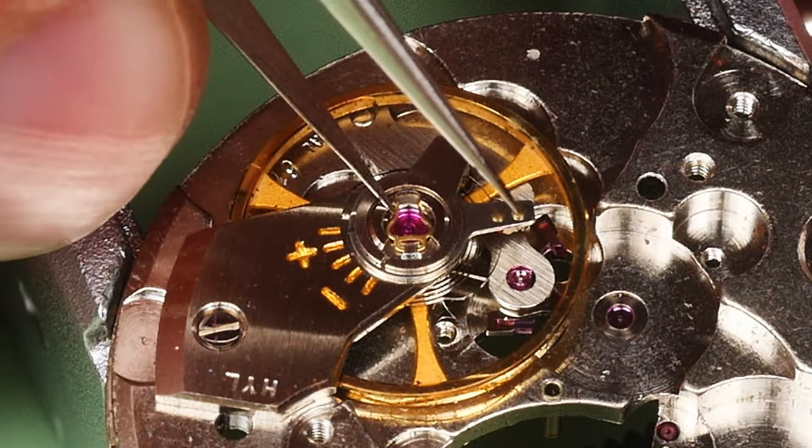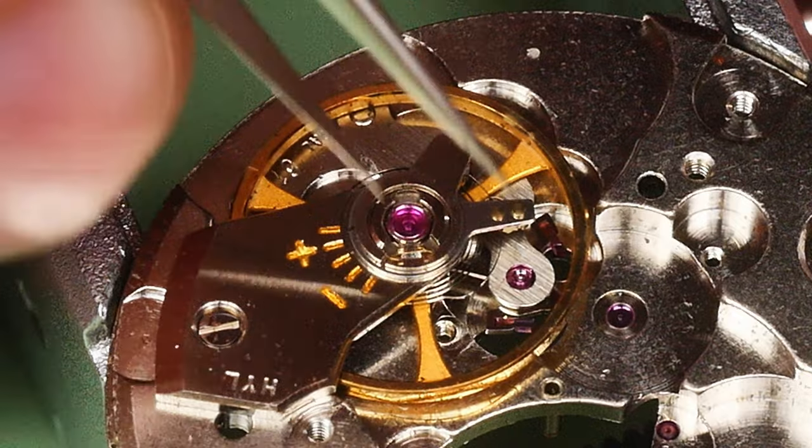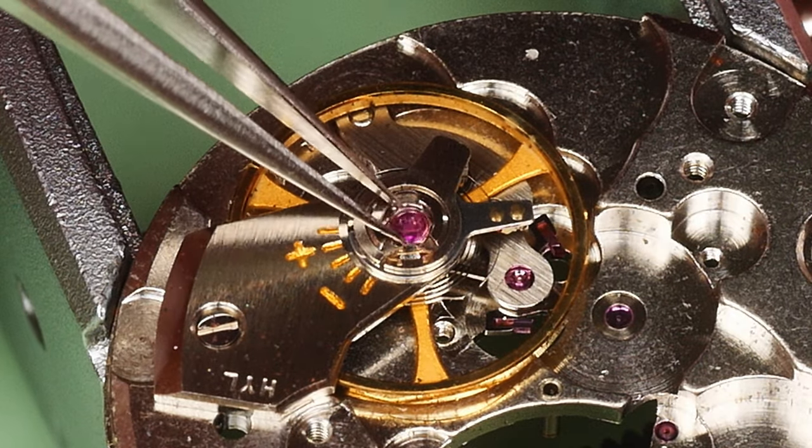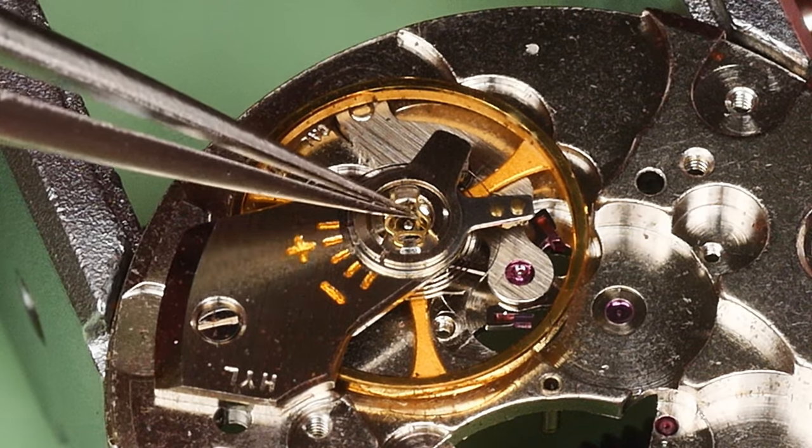With the balance cock still firmly in place, I'll open the balance jewel shock so I can get at the balance jewel and setting. I'll clean these two parts in one dip separately from the rest of the components. I'll close up the shock here to prevent any damage.